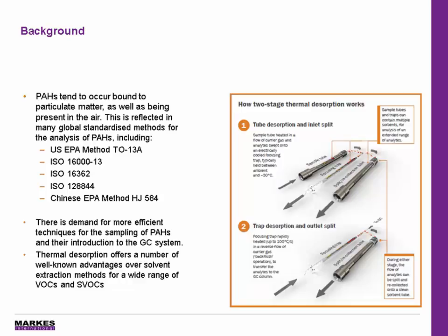To the right of the slide, we can see a diagram showing how thermal desorption works, broken down into two stages. The first stage is where the sample tube, which has had ambient air pumped onto it, is placed inside the thermal desorption instrument. A flow of gas is applied and the compounds of interest are swept from the tube onto a focusing trap. This focusing trap is typically held anywhere between room temperature down to minus 30 degrees, depending on the analytes of interest. At this point we can split — termed the inlet split — and this split can be recollected onto a clean sorbent tube.